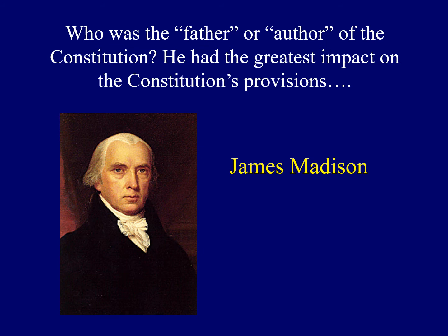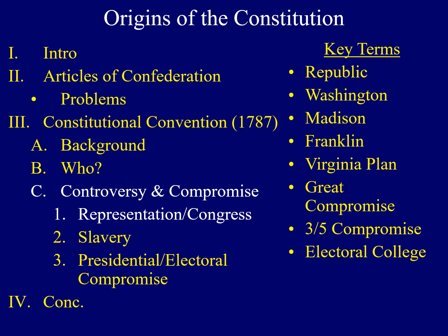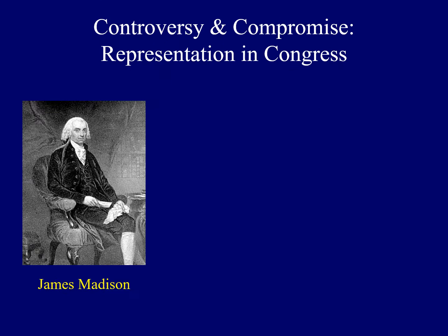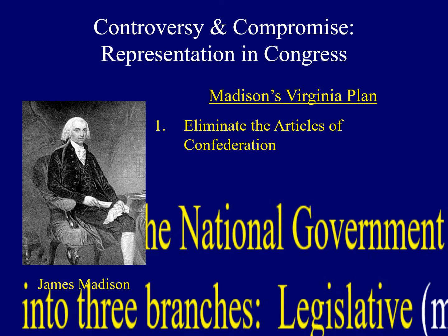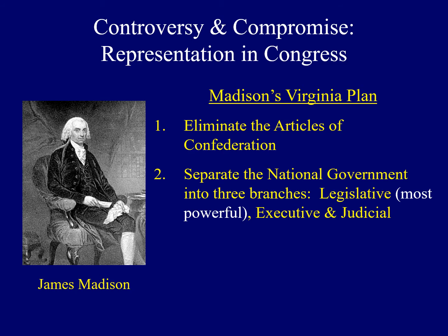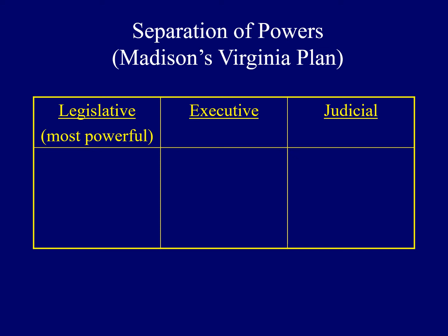We'll explore some of the controversies and how they were resolved through compromise at the Constitutional Convention. The first dealt with how each state would be represented in Congress. Madison's Virginia Plan set the stage for one of the first controversies. The first two provisions were actually accepted by everyone: first, he called for the elimination of the Articles of Confederation; and second, he argued that the national government should be divided into three branches — the legislative, executive, and judicial. Madison argued that the legislative branch should be the most powerful of the three branches.